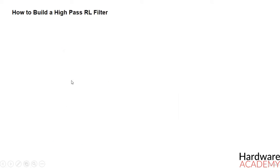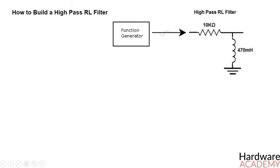And now, let's see how to build a high-pass RL filter. To build a high-pass RL filter, just like the RC circuit, we use a function generator, a resistor, and an inductor.